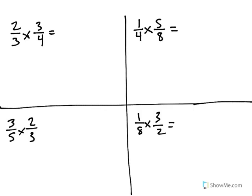In this video, we're going to look at a quick way to multiply two fractions together. These are practice drill problems. The fastest way to do this is to multiply the numerator times the numerator, and then denominator times denominator. We'll use the top left as our first example. When you're multiplying two fractions together, that's all you have to do.